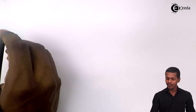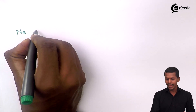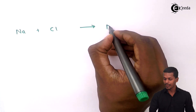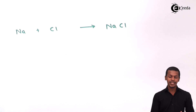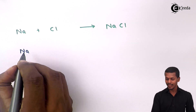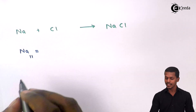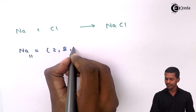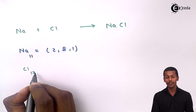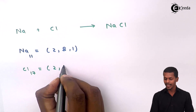Let me give you an example. I'll use the same example discussed earlier — that is NaCl. Whenever we combine sodium and chlorine atoms, we obtain NaCl. The electronic configuration of sodium (atomic number 11) is 2,8,1. And that of the chlorine atom, which has atomic number 17, is 2,8,7.